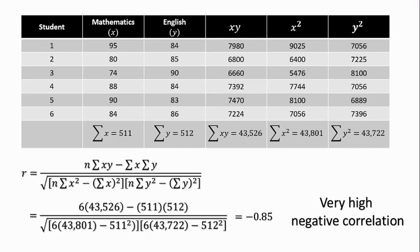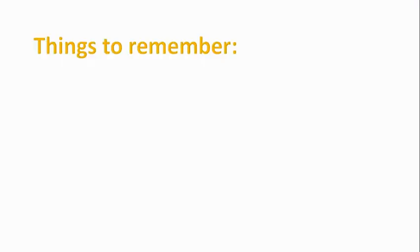One possible interpretation of this result is that, for this particular group, performance in the two subjects tends to go in opposite direction. High performers in math tend to be low performers in English and vice versa. Of course, in reality, this is not necessarily true. We have seen a lot of people who perform excellently in both fields.